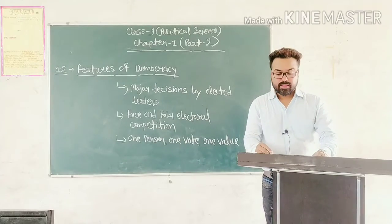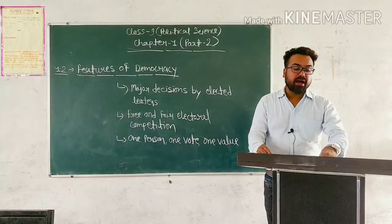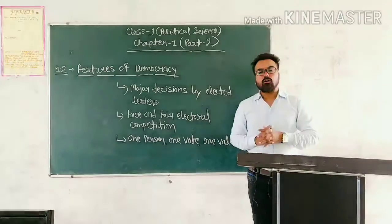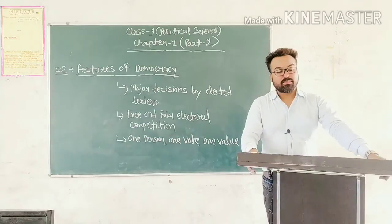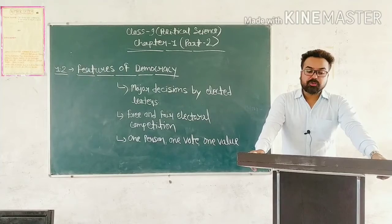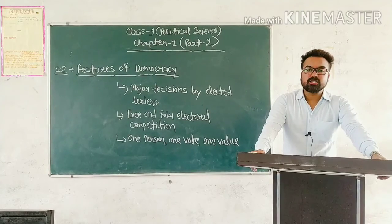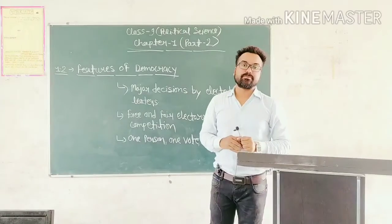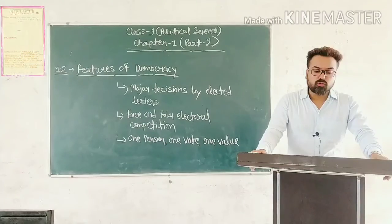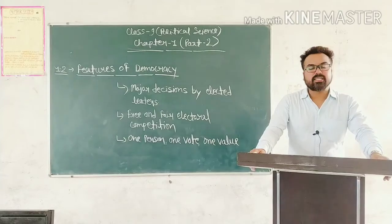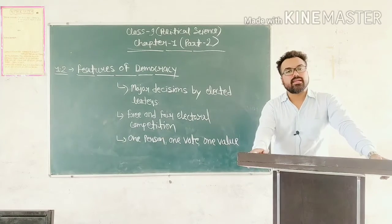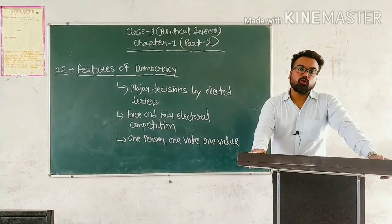لیکن until 2000, every election was won by a party called P.R.I. — Institutional Revolutionary Party۔ Opposition parties did contest elections but never managed to win. The P.R.I. was known to use many dirty tricks to win elections — چنائوں میں جیتنے کے لیے بہت سارے tricks استعمال کرتی تھی۔